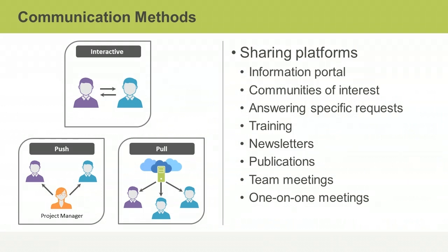The pull communication method is used for large volumes of information or for very large audiences. Recipients access the communication content at their own discretion; as such, you won't know if the information has been accessed or understood. Methods of pull communication include intranet sites, e-learning resources, project websites, and knowledge bases. Information can be shared through portals, secured web pages, wiki pages, or communities of interest, depending on the sensitivity of the information.